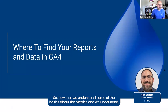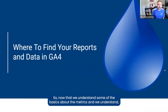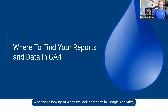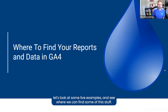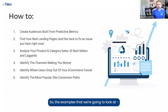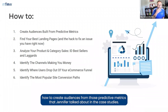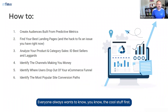Now that we understand some of the basics about the metrics and we understand how to orient ourselves and have a better idea of what we're looking at when we look at reports in Google Analytics, let's look at some live examples and see where we can find some of this stuff. The examples we're going to look at include how to create audiences from those predictive metrics that Jennifer talked about in the case studies — everyone always wants to know the cool stuff first, so we'll go over that and see how to use some of those methods.